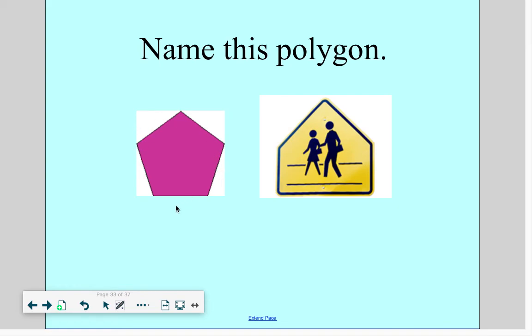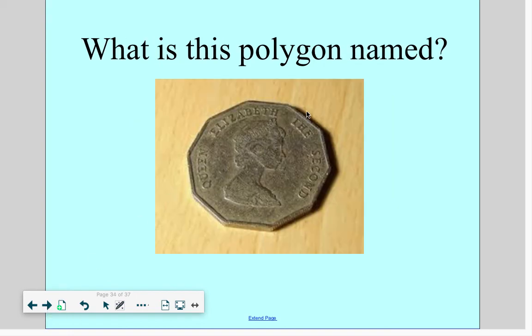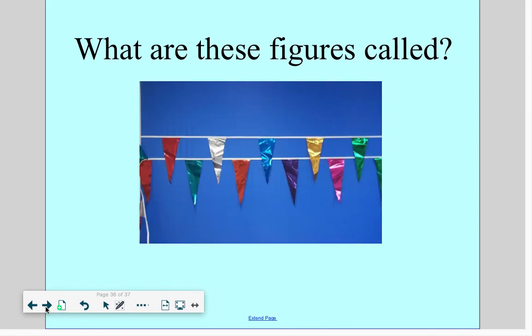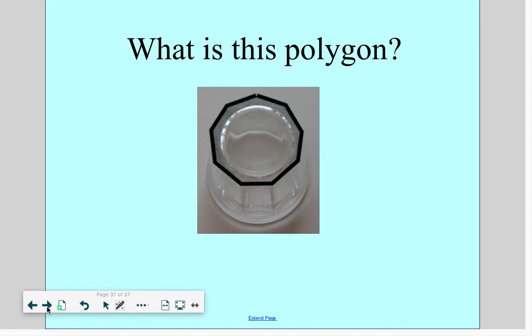One, two, three, four, five, six, seven, eight, nine, ten. A ten-sided shape is called a decagon. One, two, three, four, five, six, seven. A seven-sided shape is called a heptagon. What are those called? If you said triangles, you're right. And this last shape right here. One, two, three, four, five, six, seven, eight, nine. A nine-sided shape is called a nonagon.